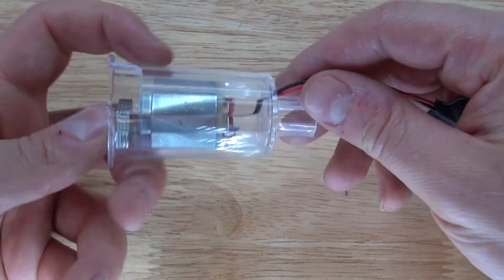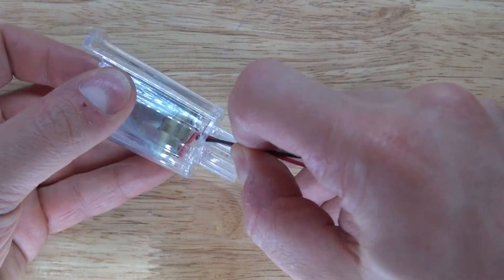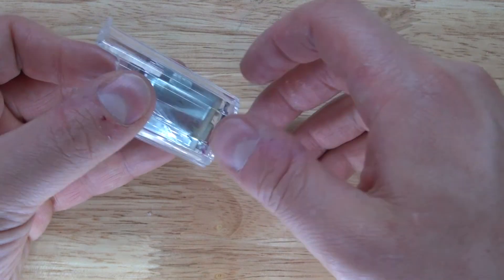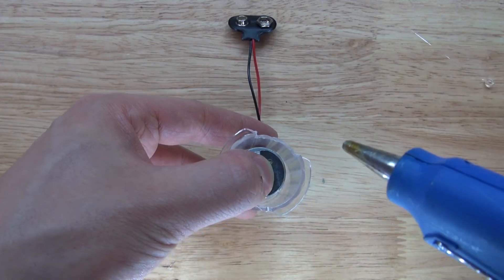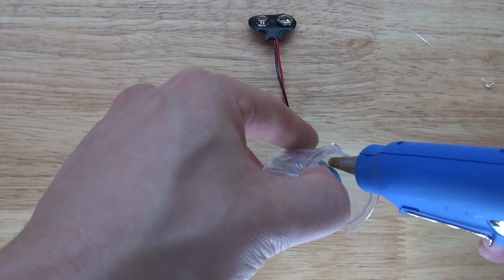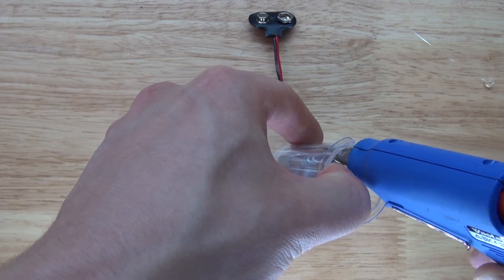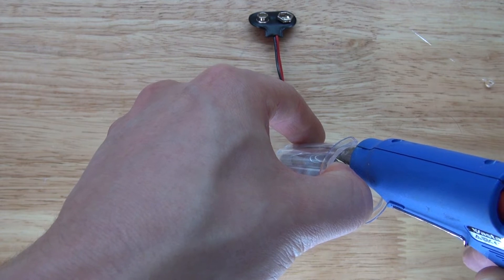So I go ahead, put it inside, pull on the wire a little bit, and then it's going to be wobbling inside. So what I'm going to need to do is put some hot glue in between to keep it from vibrating all over the place and it stays in place.